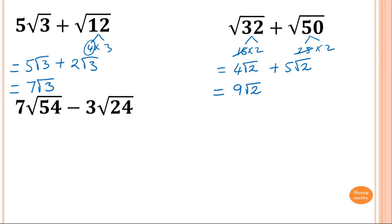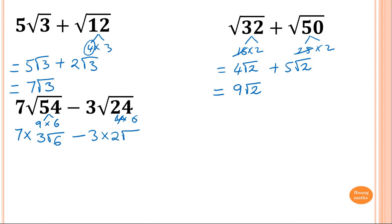Now: 7 square root of 54 minus 3 square root of 24. For 54: that's 9 times 6, so root 9 is 3, giving 7 times 3 root 6, which is 21 root 6. For 24: that's 4 times 6, so root 4 is 2, giving 3 times 2 root 6, which is 6 root 6. Then 21 minus 6 is 15, so the answer is 15 square root of 6.